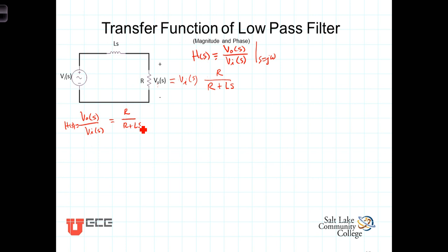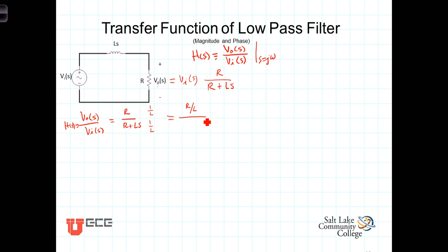Now in our study of transfer functions, we saw that a very convenient form was to have the highest power of S in the denominator with a coefficient of 1, and then let everything else fall as it may. So let's multiply the numerator and the denominator by 1 over L. When we do that, we rearrange the denominator into descending powers of S, giving us in the numerator R over L, divided by S plus R over L. So that is the transfer function.